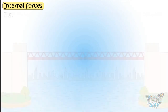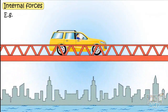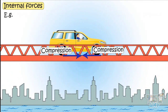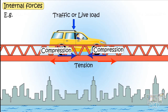Here is a simple beam bridge. On the upper surface of the bridge, compression is created due to the live load or the weight that the bridge is carrying. And on the lower surface of the beam bridge, tension is being created as the lower surface is stretched or elongated.